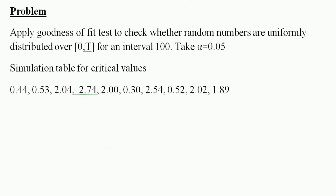Now let us see the problem. Apply the goodness of fit test to check whether the random numbers are uniformly distributed over an interval 0 to T. Take alpha equal to 0.05. The simulation data values given are: 0.44, 0.53, 2.04, 2.74, 2.00, 0.30, 2.54, 0.52, 2.02, and 1.89.